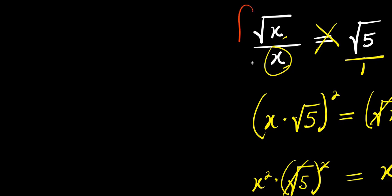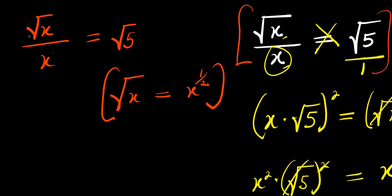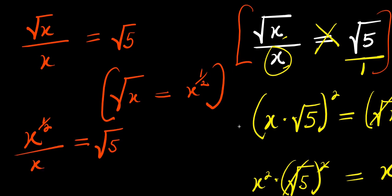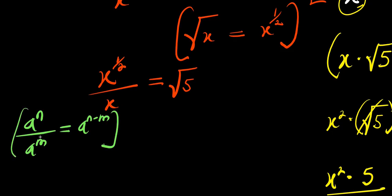We can also solve this equation using another method. We have square root of x divided by x equals square root of 5. Remember, square root of x is the same as x power 1 over 2. So we replace square root of x with x power 1 over 2: x power 1 over 2 divided by x equals square root of 5. Using the rule a power n divided by a power n equals a power n minus n, this becomes x power 1 over 2 minus 1, and this equals square root of 5.